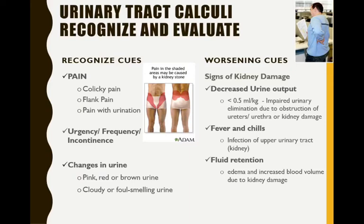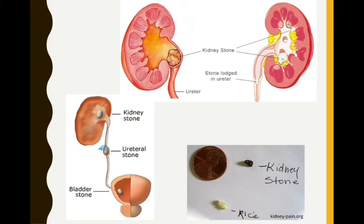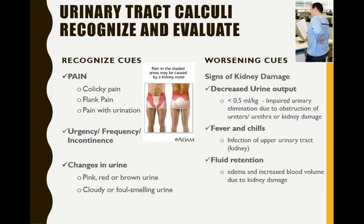The pain is colicky — it comes and goes in spasms. It is found in the flank, meaning the sides and lower back. You could have pain with urination from the spasms trying to get the stone out. You can have urgency and frequency. Urinary incontinence usually occurs when the stone is stuck in the urethra, causing the bladder or urethra to spasm and leak around the stone.